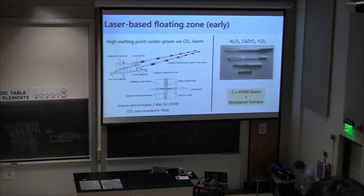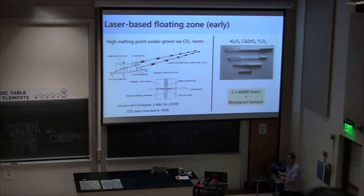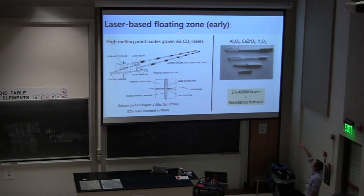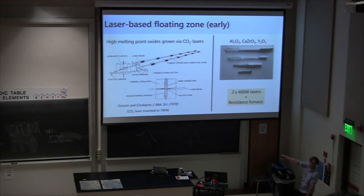Another way of heating the sample optically is to take a laser rather than a broadband halogen or xenon source focused via a mirror. This is actually an old idea — the first paper I could find is by Gasson and Cockayne in the UK in 1970, which is only six years after the high-power CO2 laser was first invented.